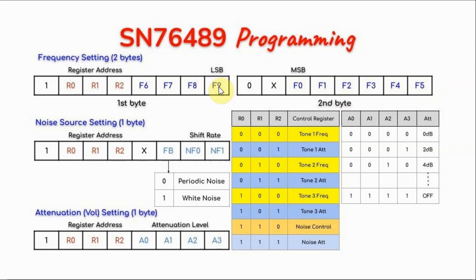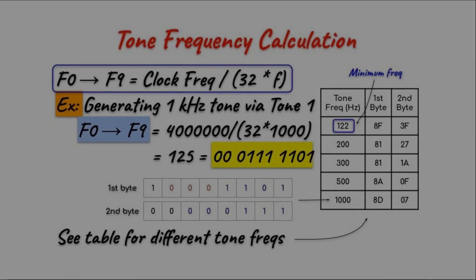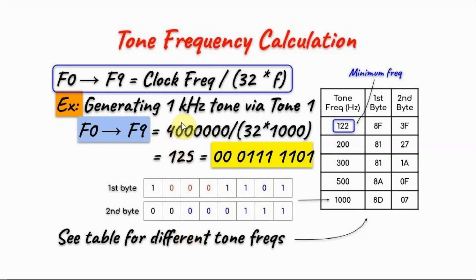The next example will demonstrate how to program the chip so that we have a tone with a certain frequency. In this example, we want to generate a 1 kHz tone using the tone 1 generator in channel 0.